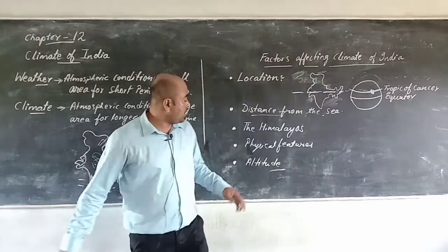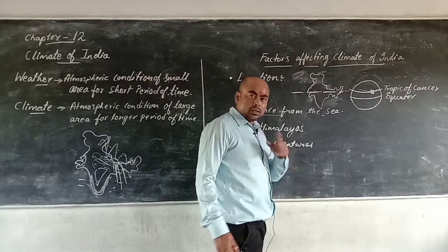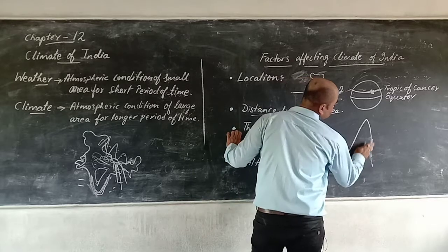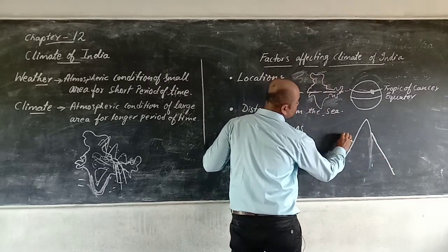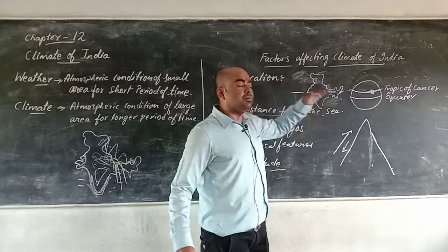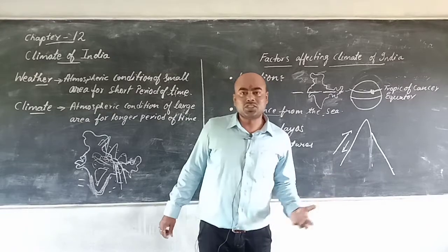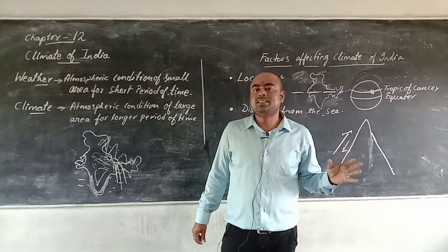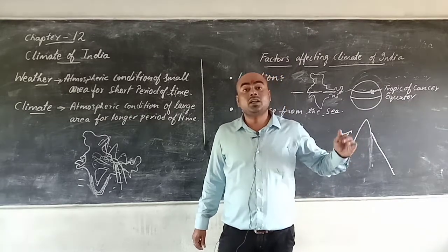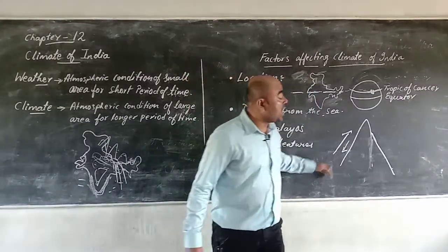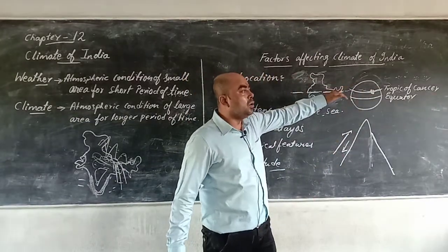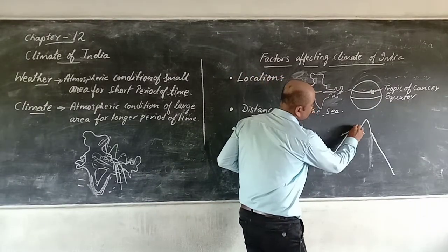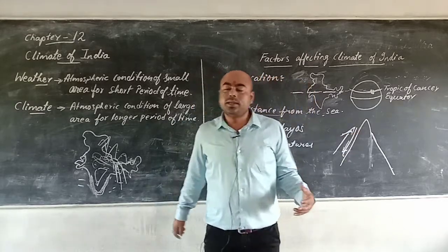Next is altitude, which refers to height. Higher the altitude, lower the temperature. If you have visited any hill stations nearby, you will feel that the temperature is much lower there — that is because they are situated at a high altitude. So temperature decreases with increase in altitude, and wherever there are mountains, they will have a cold type of climate.